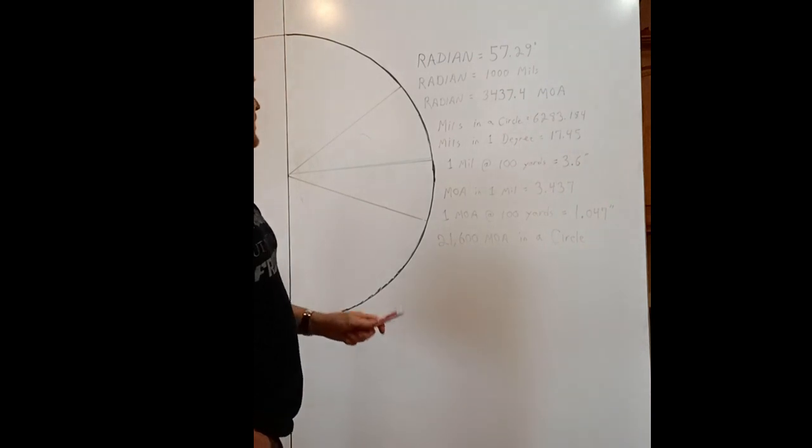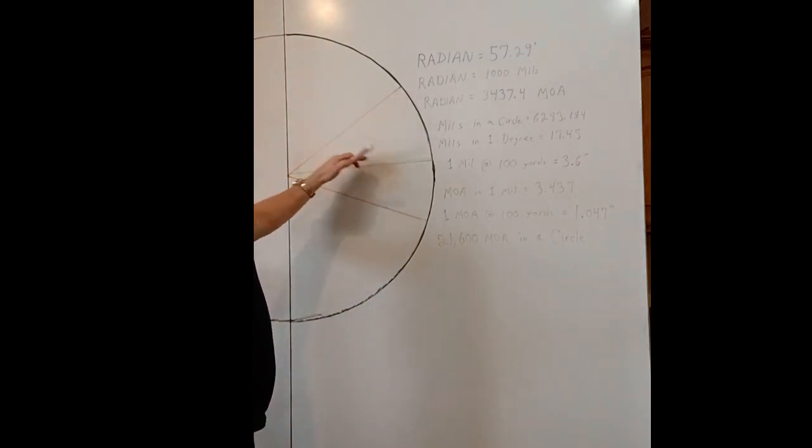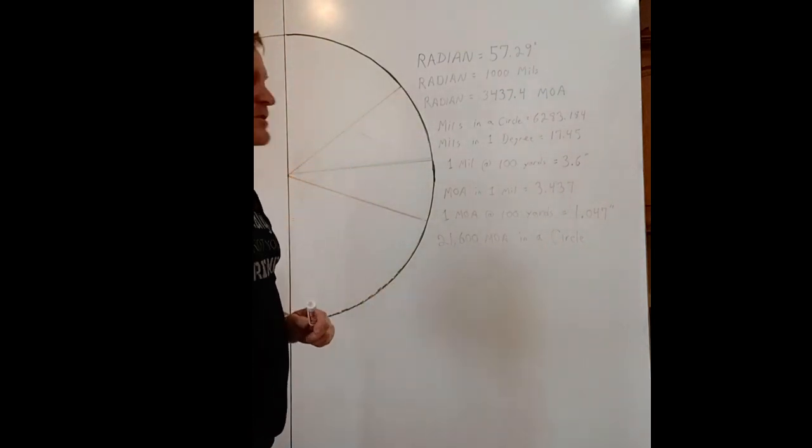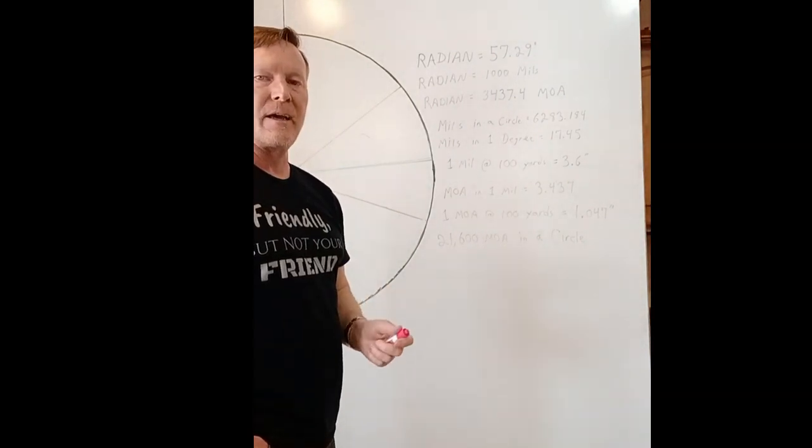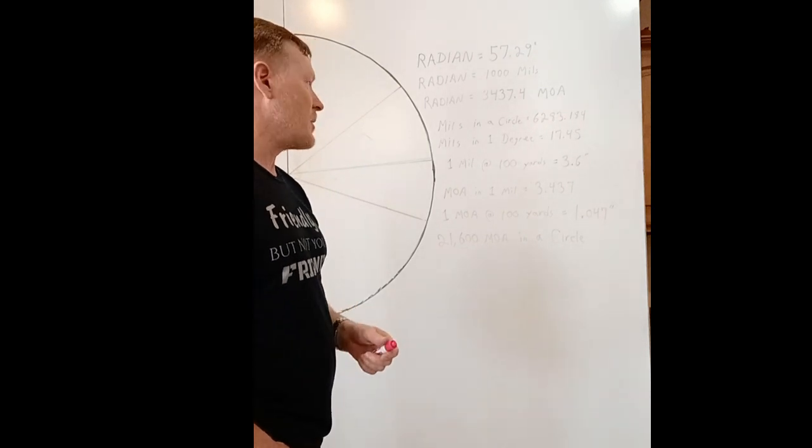And then if you split that radian into a thousand pieces, a thousand equal slices, each one of those is a milradian, also called a mil, an MRAD, or a milrad.